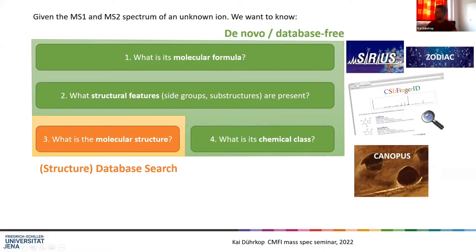On the right side are the modules used for answering these questions. Just to make things a bit confusing: our software is named SIRIUS, and it has many modules with their own names — one module is also called SIRIUS. SIRIUS and its modules handle molecular formula annotation; CSI:FingerID is the module for structure annotation; and CANOPUS is for chemical class analysis. I'll give a short overview of these modules and how to use them.